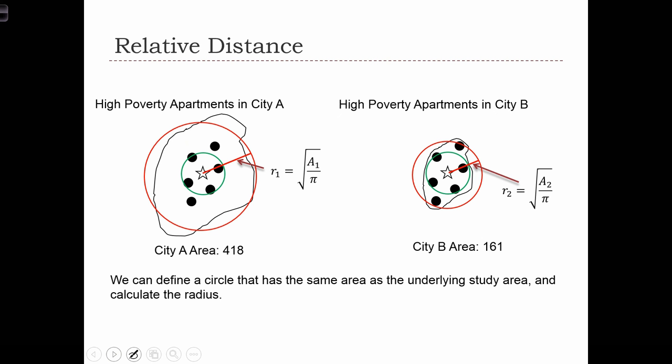Here we have the two point distributions again, and what we're showing is how we would calculate the radius for the study area. As we know, area equals pi r squared. And if we wanted to solve for the radius given a known area, we would find that radius equals root of a over pi, which is precisely what we are calculating in these two formulae.